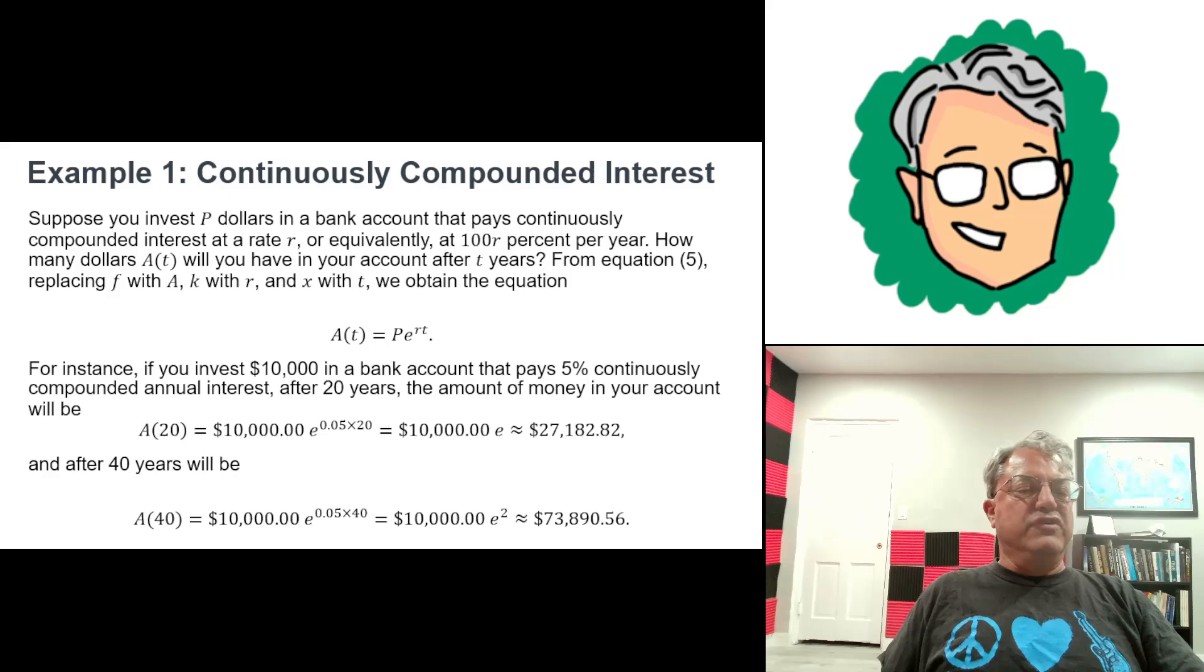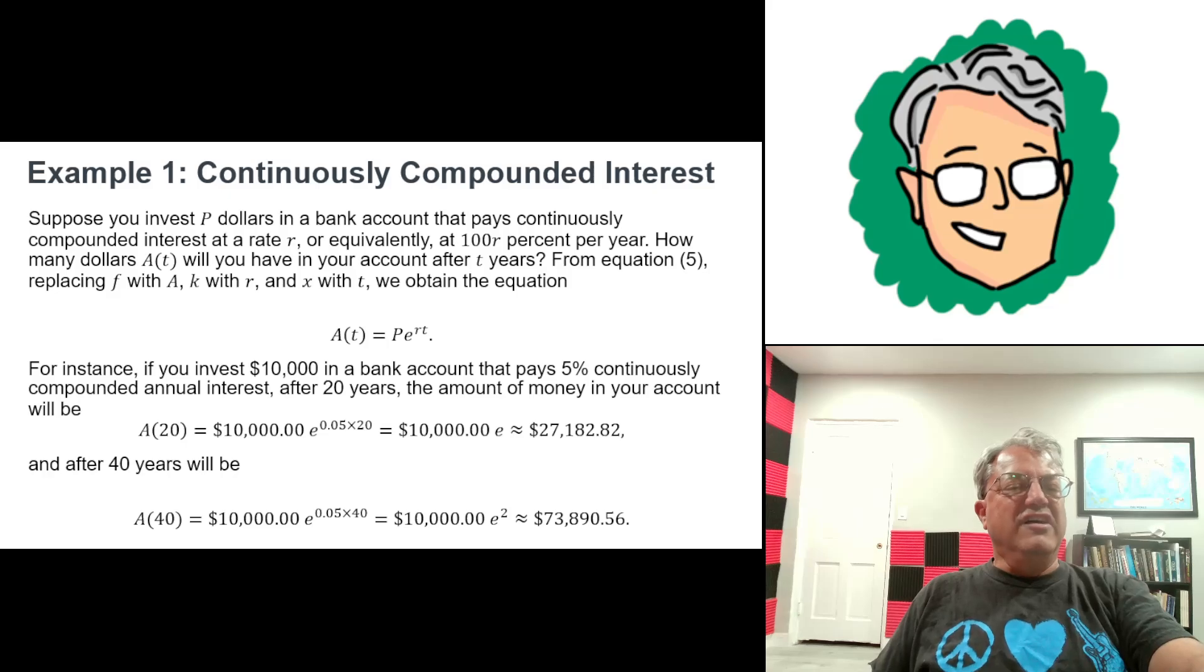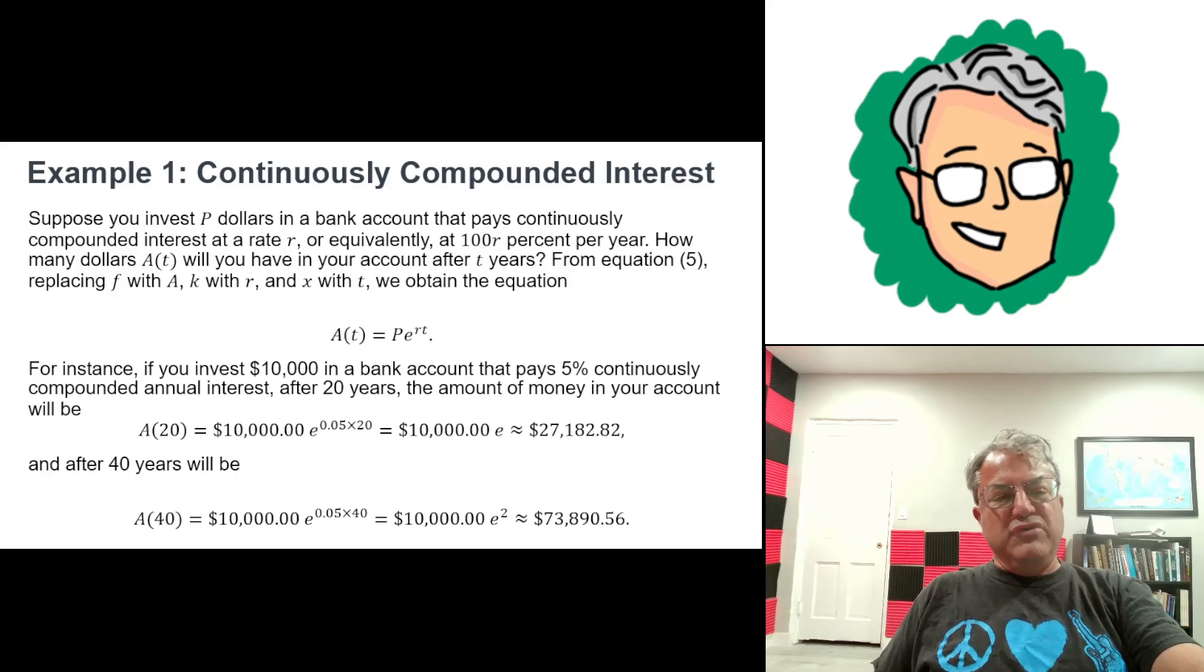And if you kept it in for 40 years, then you'd have 10,000 e squared. And now it's about $74,000. So you'd have a lot of money after 40 years, of course, probably would just barely keep up with inflation if that was the case. But anyway, so that's one example.